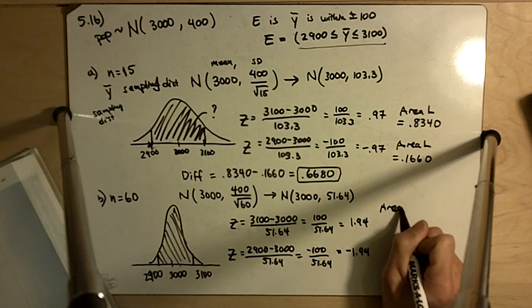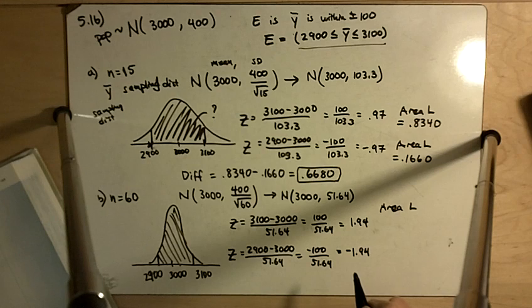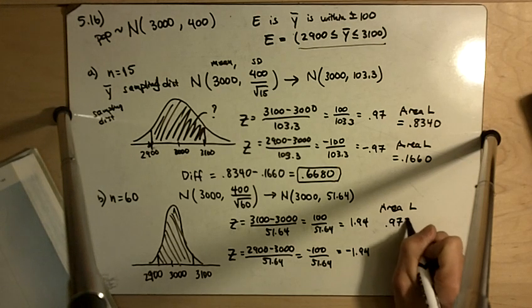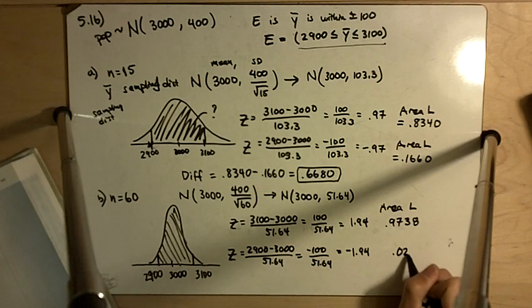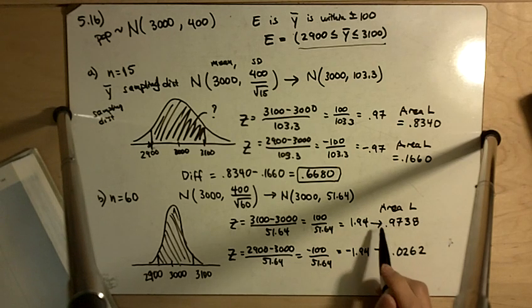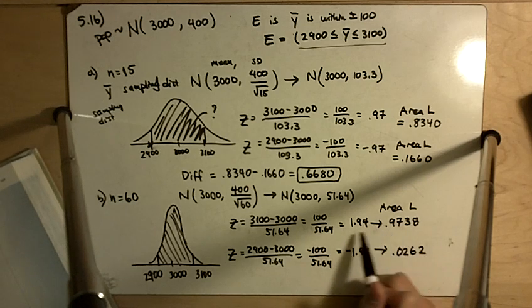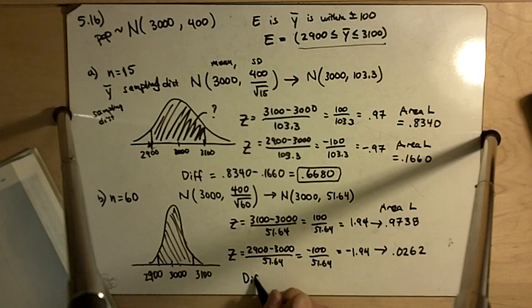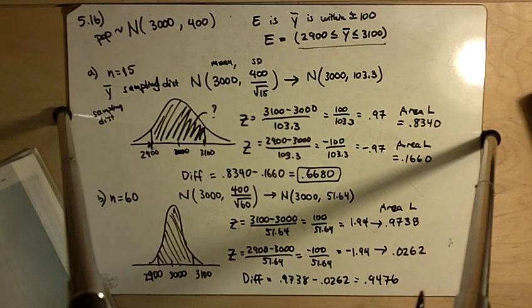The area to the left of positive 1.94 is 0.9738. And the area to the left of negative 1.94 is 0.0262. I always draw arrows because you might be tempted to write equals, but it's always arrows because 1.94 does not equal 0.973. It's the area to the left of 1.94 is that. And so the difference there is 0.9738 minus 0.0262, and we get 0.9476. So not quite 95%, but very close to it.